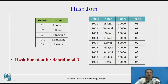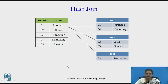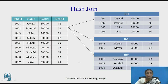Let us look at an example. We have two relations: department with department_id and department_name, and employee with employee_id, name, salary, and department_id. We want to perform department join employee. The first hash function used is department_id mod 3 for partitioning, applied to both relations. So department ids 1, 2, 3, 4, 5 are split into 3 partitions: 1 and 4 go to hs1, 2 and 5 go to hs2, and 3 goes to hs0. The same hash function is applied for employee, again generating 3 partitions.